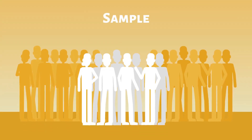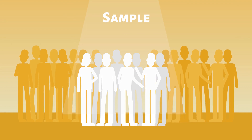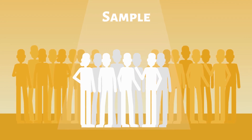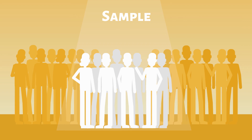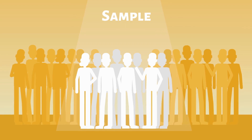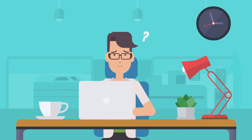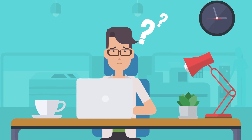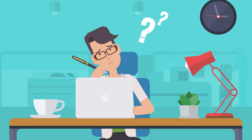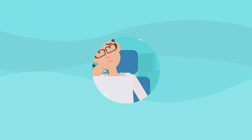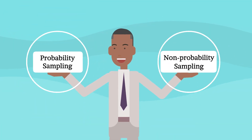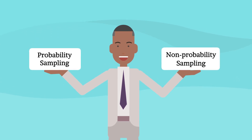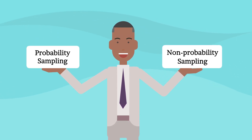You must select some of the population to carry out your research. The sample you select should be representative of the population of interest. To select a sample, there are two main approaches: probability sampling and non-probability sampling.